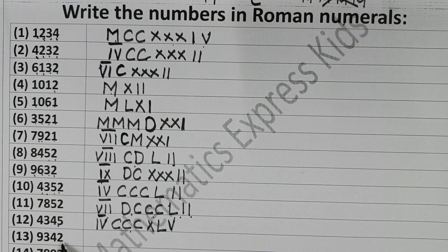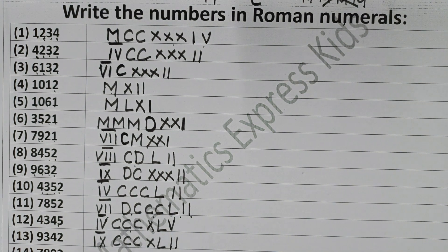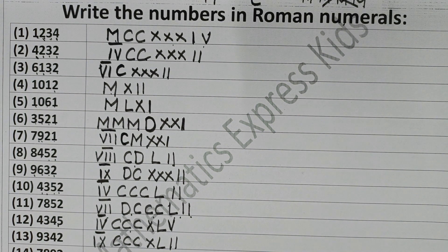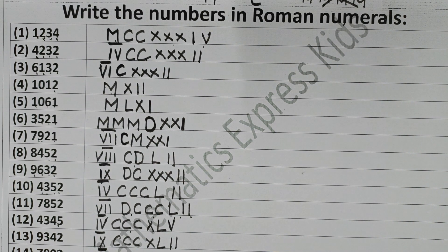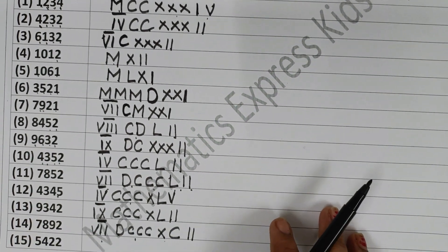Now 9342. For 9000, write IX with a bar. Then 300 is CCC, 40 is XL, and 2 is II. Now 7892: for 7000, write VII with a bar — just give a single bar over it. For 800: write 500 and add 300 to it — DCCC. For 90: write 100 and subtract 10 from it — XC — that is 90. Then 2 is II. So 7892 is VII-bar DCCCXCII.